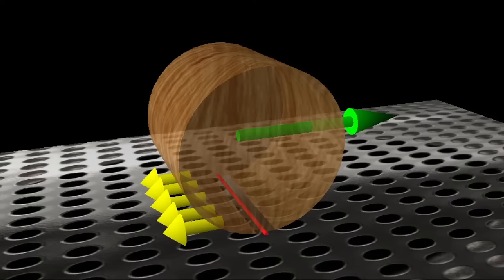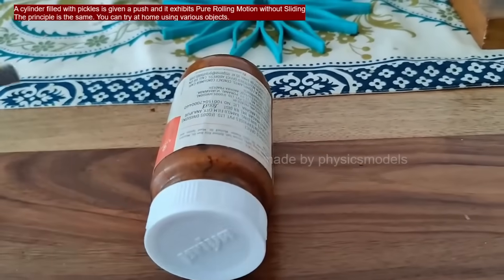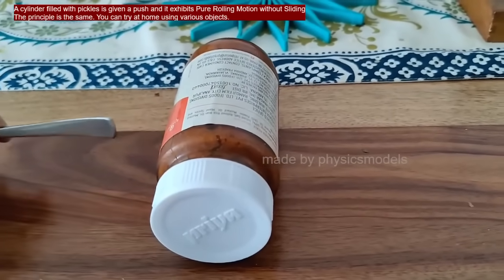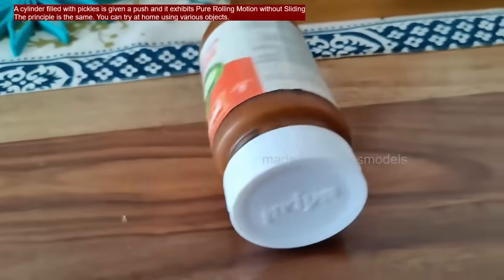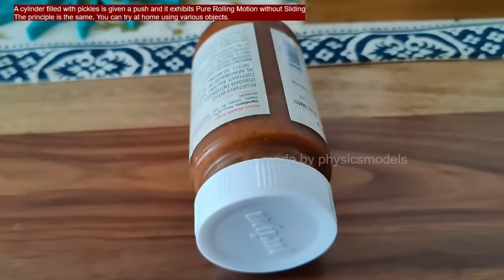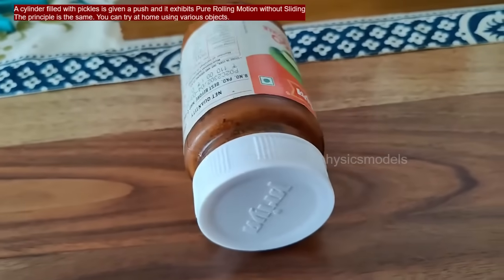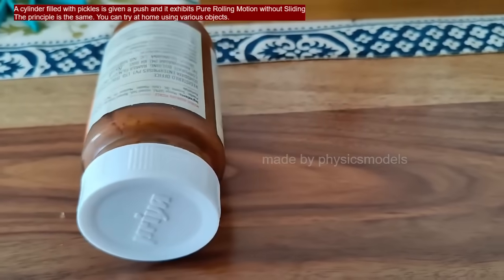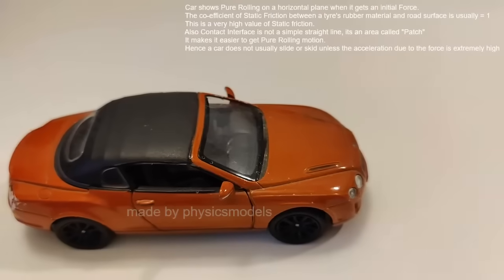With this sketch we try one more video and we just roll a bottle on the table and you can see it performs pure rolling. It's coming back because there is a kind of depression in the table so it settles down to the minimum point.